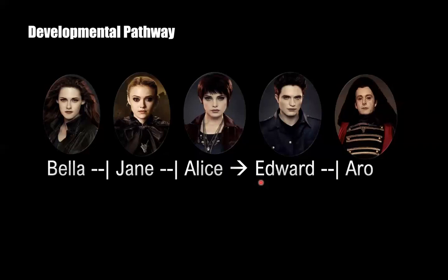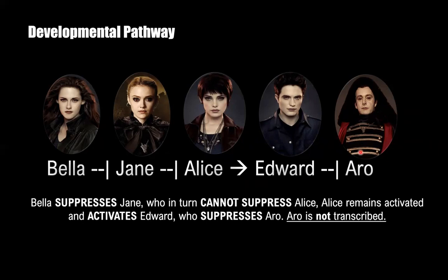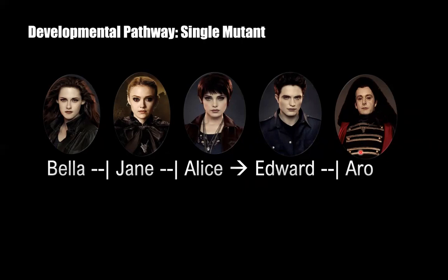In our normal developmental pathway, Bella suppresses Jane. When Jane is suppressed, she cannot suppress Alice, which leaves Alice activated. Alice is able to activate Edward, and when Edward is activated he's able to suppress Ro, so Ro is not transcribed. This is what we want — we do not want Ro to be transcribed.